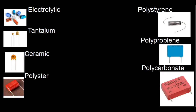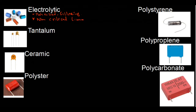Now let's quickly look at the common types of capacitors. First: electrolytic capacitors — these are polarized. They are used for filtering power supply ripples and also as non-critical timing elements.